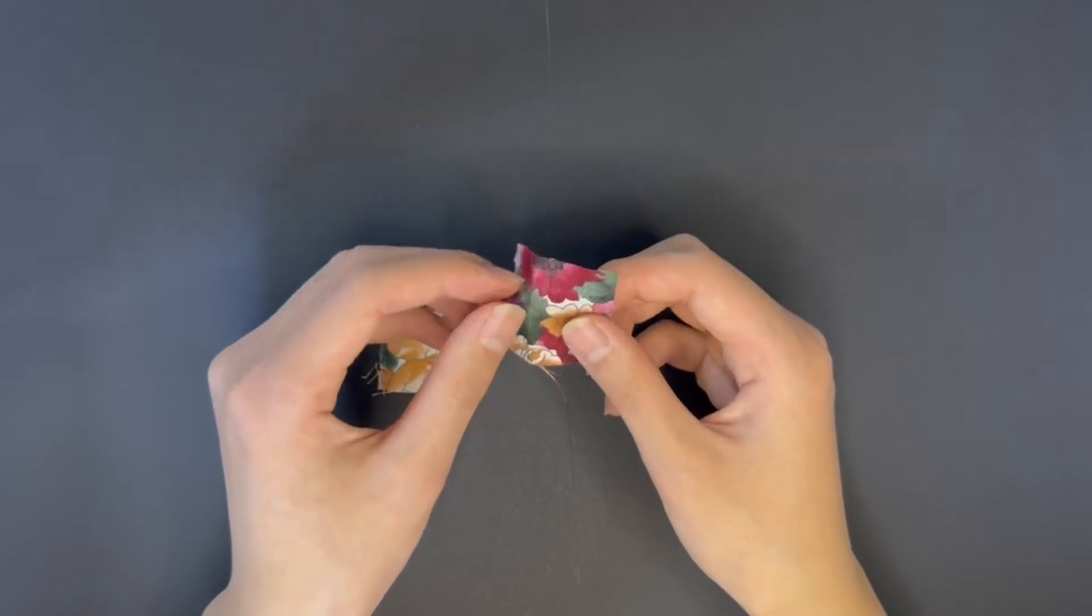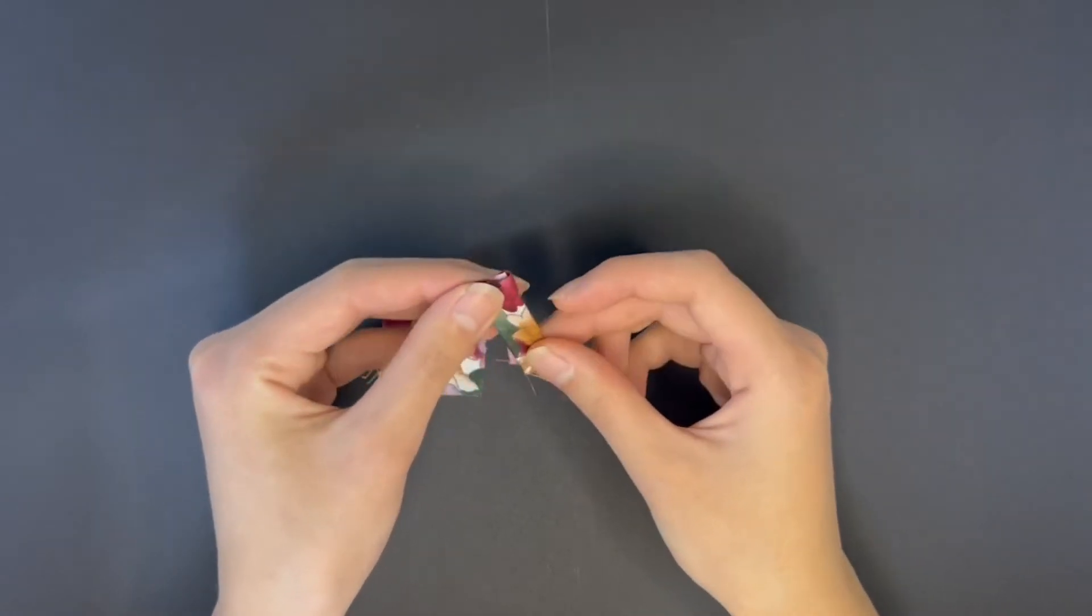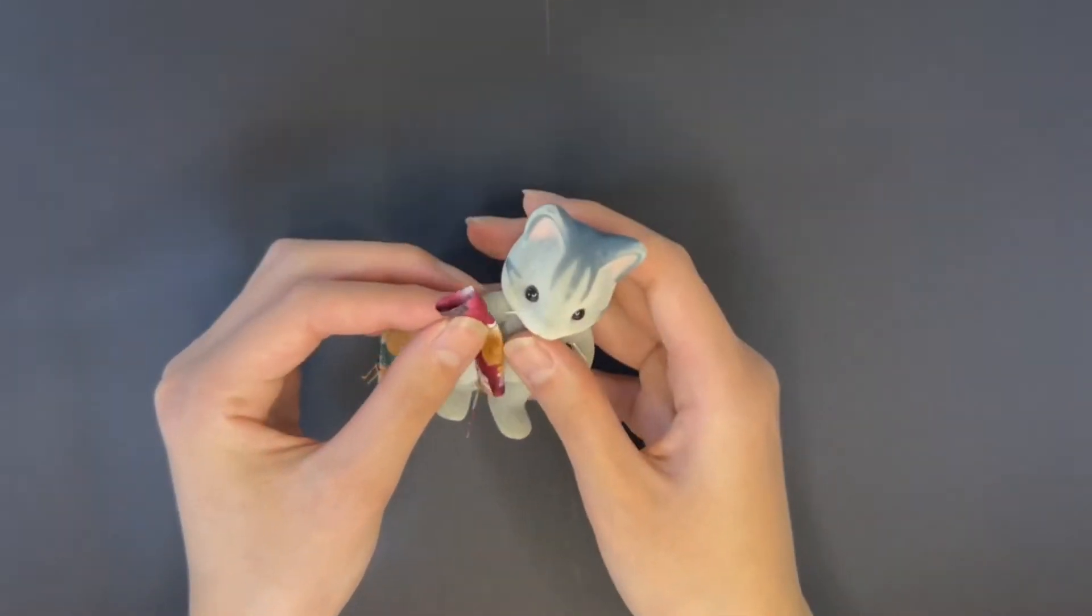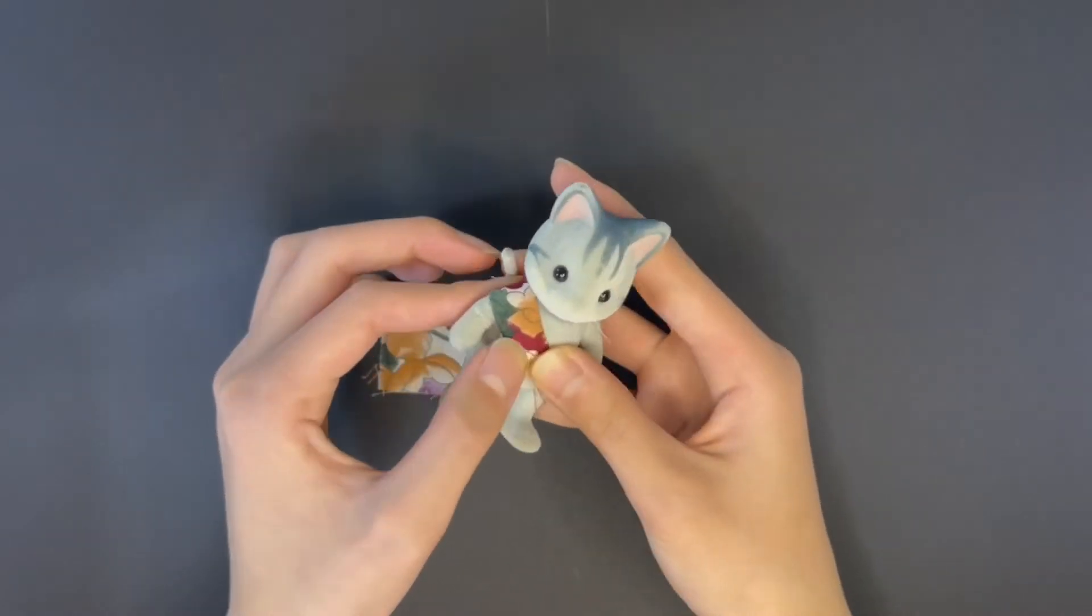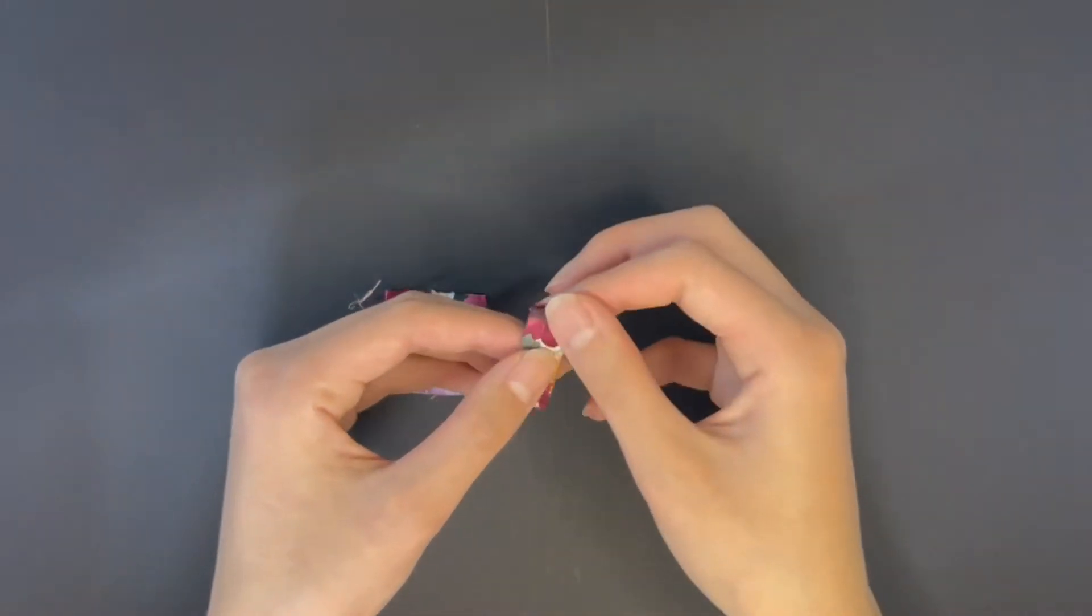Meanwhile we also have to work on the straps. The straps are easy to make, just fold leftover scraps two or three times so the raw edges face inside. Hem it, trim it, and that's it.